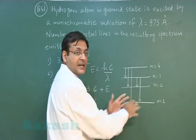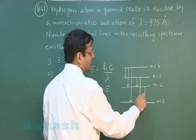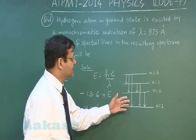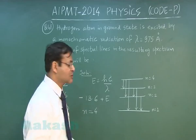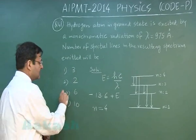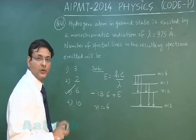And in between if the electrons, jumping electrons, if they were trapped on 2, so another spectral line like this was possible. So in total 6 lines are possible and for that the most appropriate answer will be option number 3.